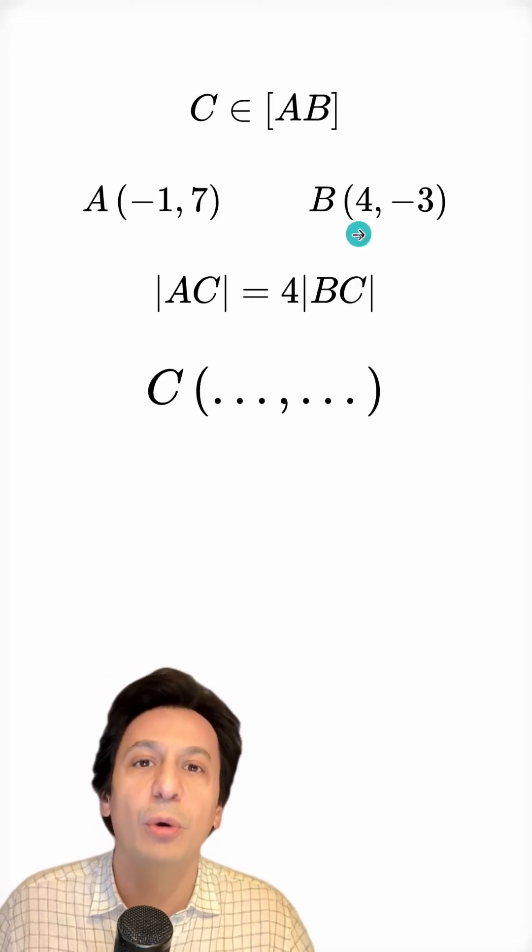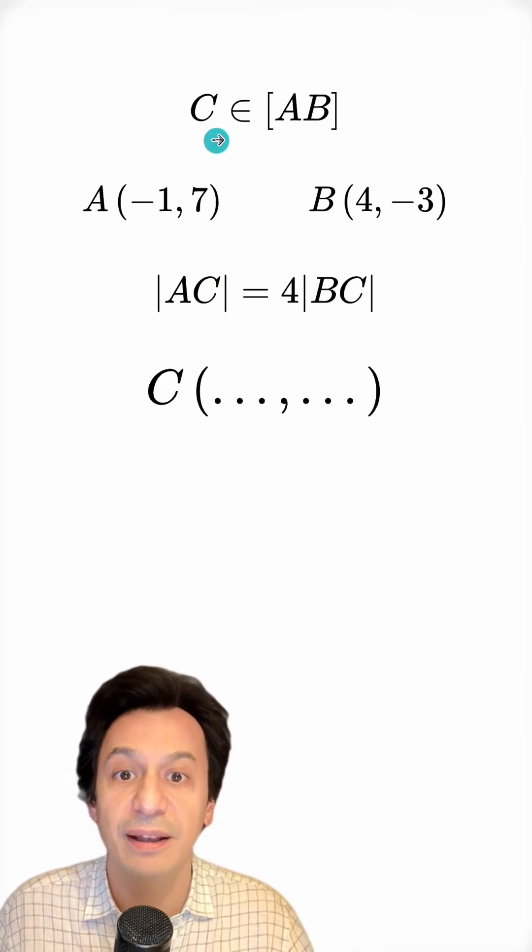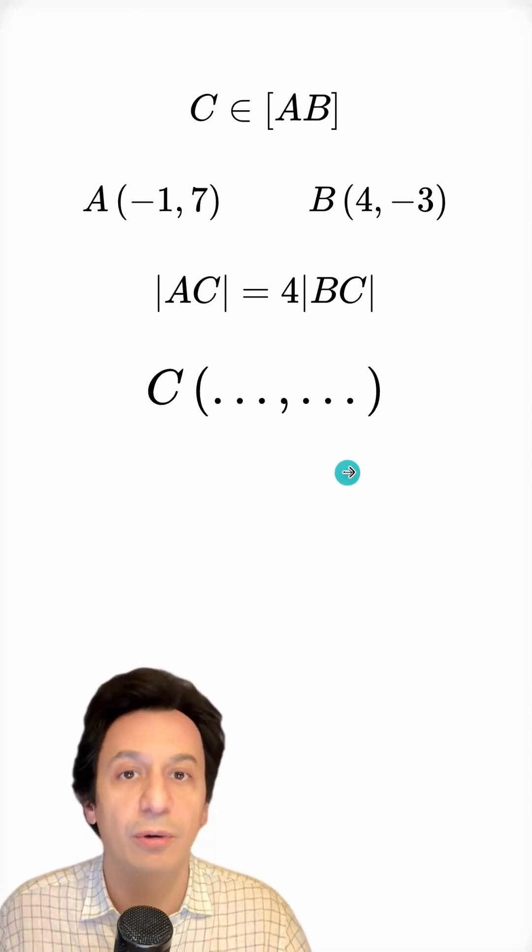A line segment AB is drawn on the coordinate plane such that there is a point C on this segment, and this point C divides the segment in the given ratio. We are asked for the coordinates of point C.